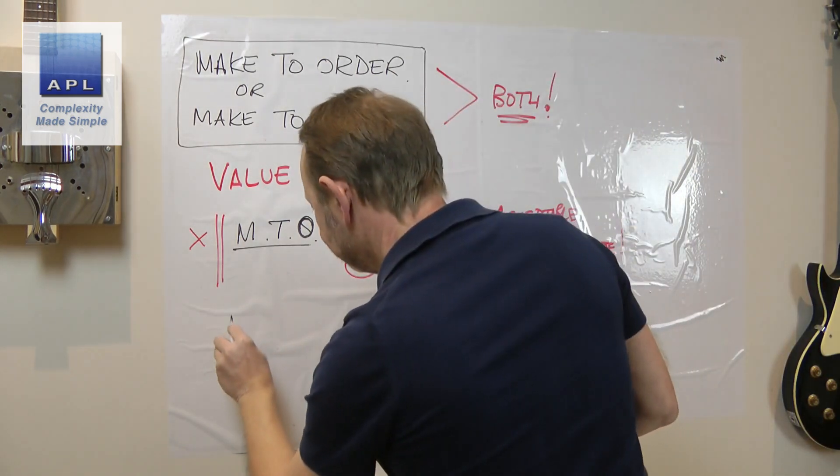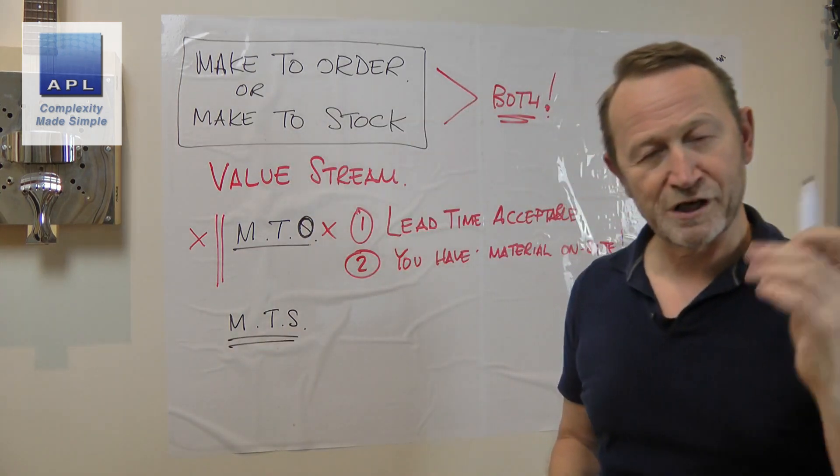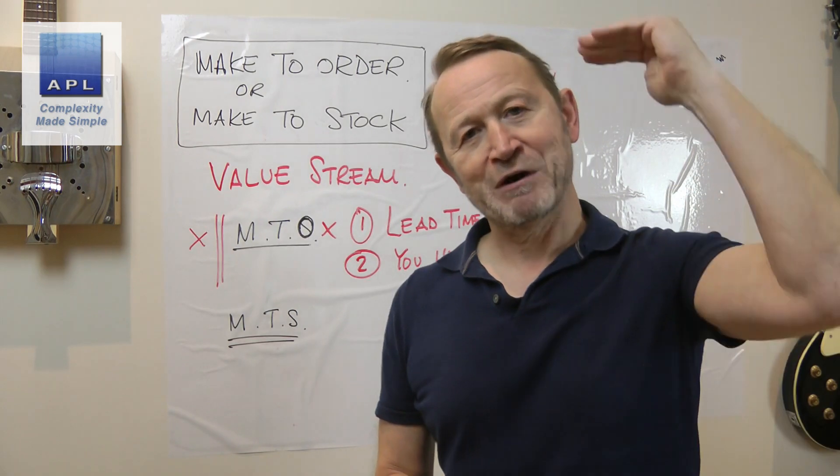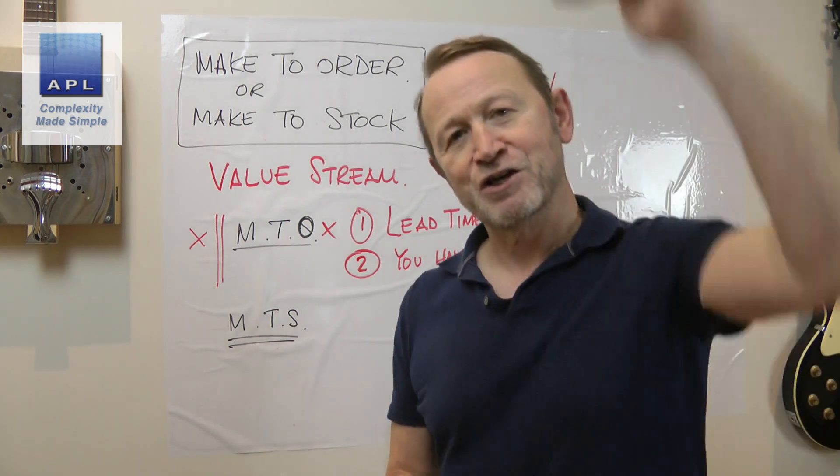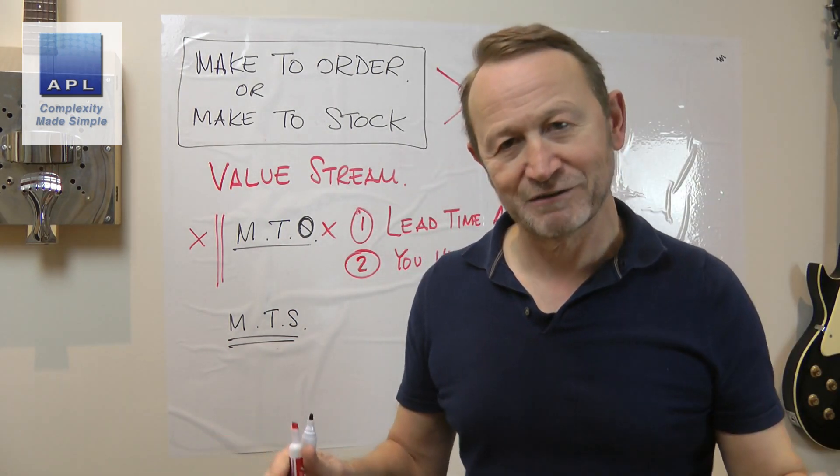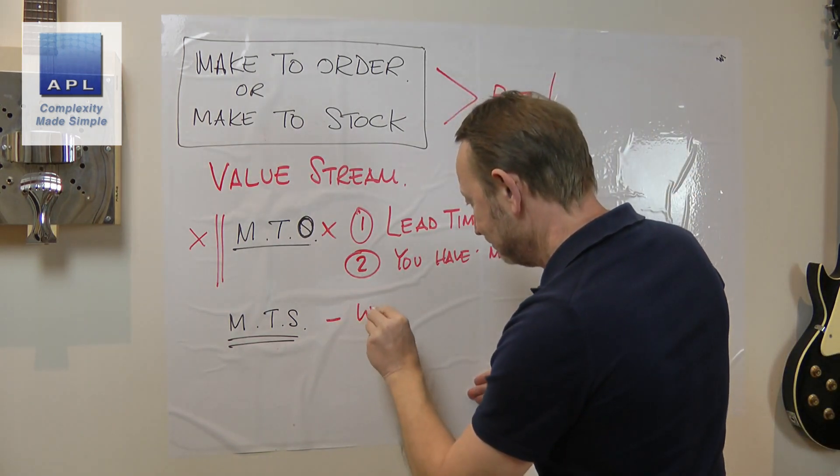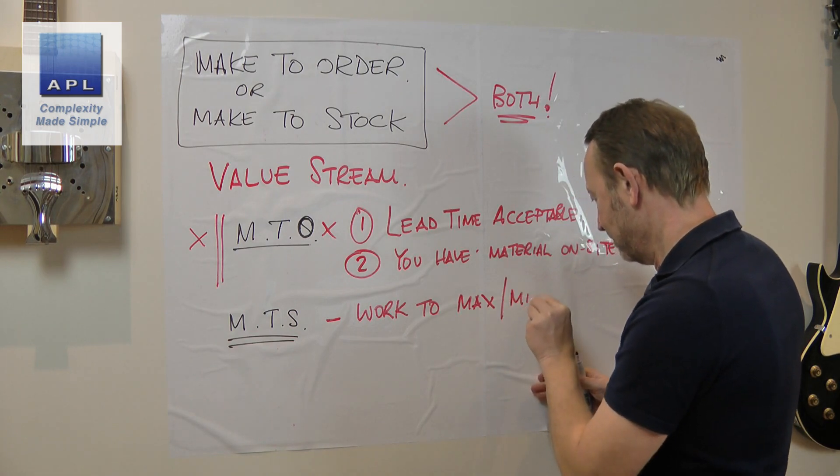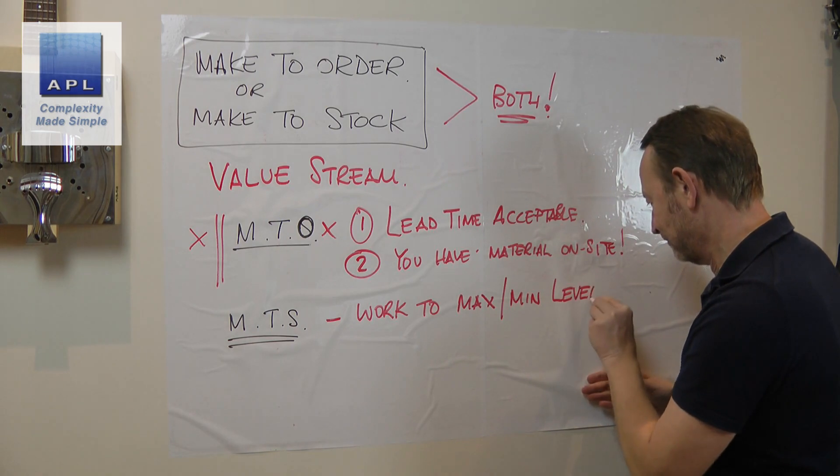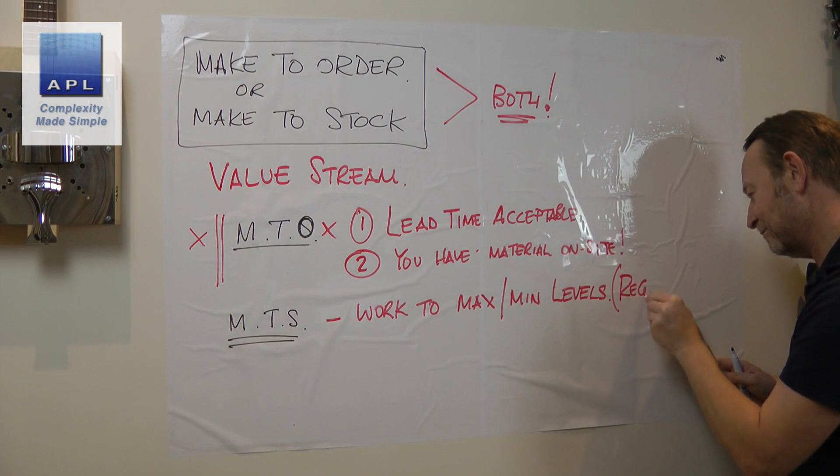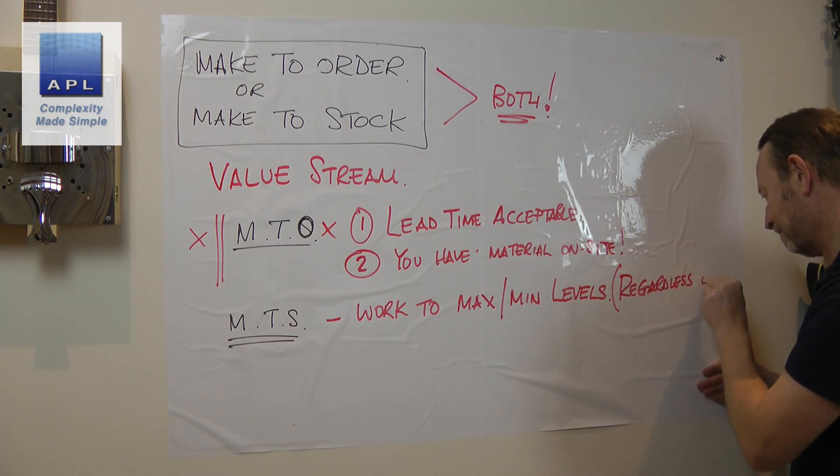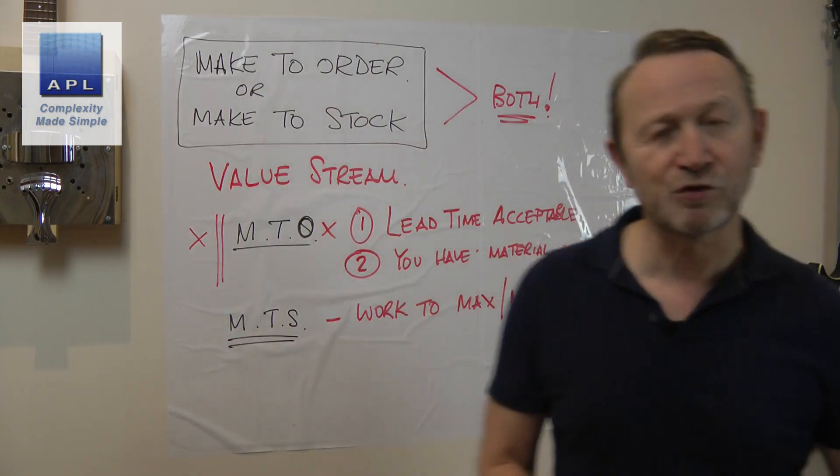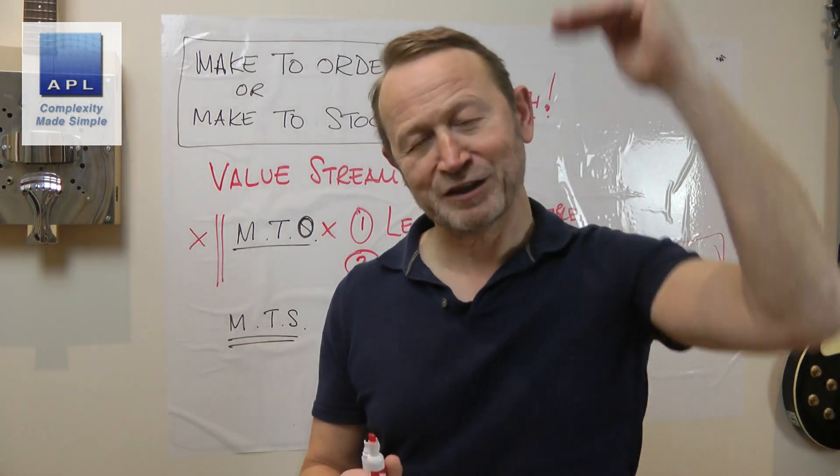Let's talk make to stock. First of all, what is it? This is really important. Let's be clear what make to stock is. You have a rule: you have a maximum, you have a minimum. When you hit the minimum, you fulfill it to the maximum, and that's it. So make to stock is work to maximum-minimum levels. And let's be clear, this is really important: regardless of orders.